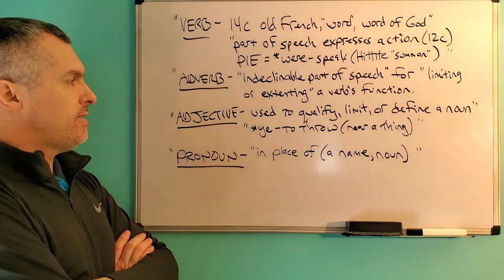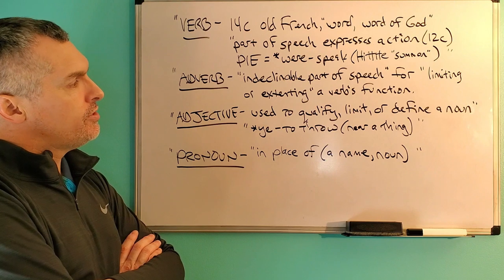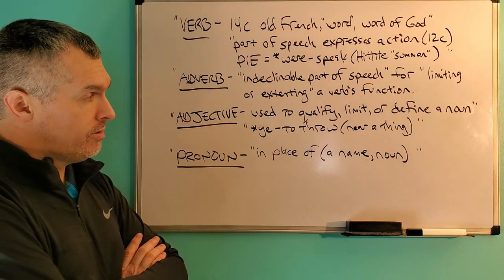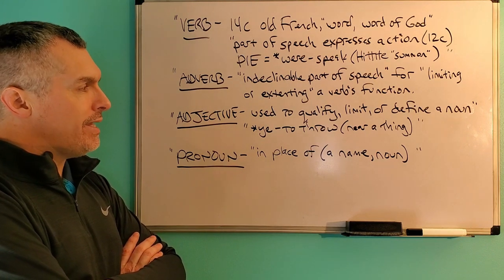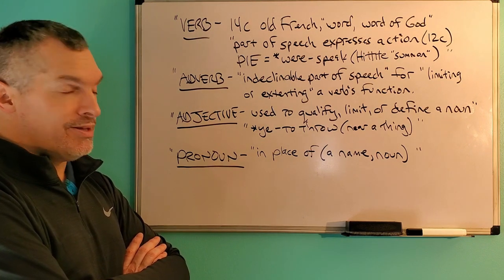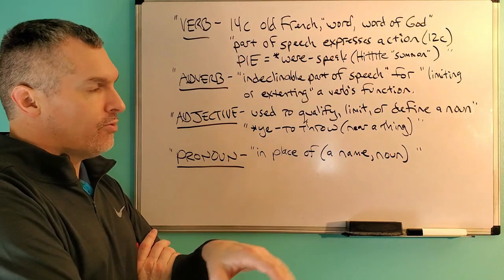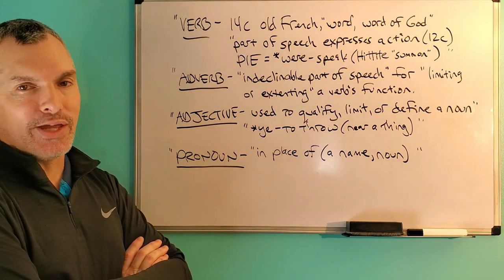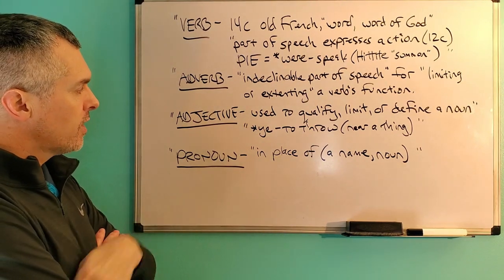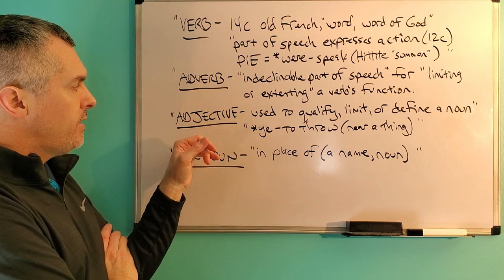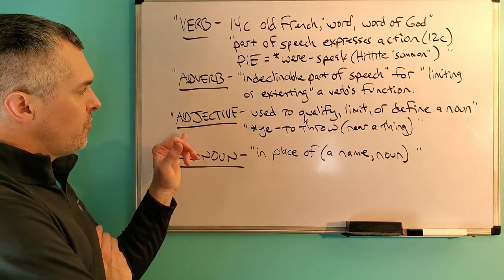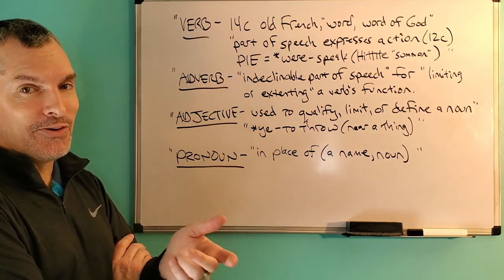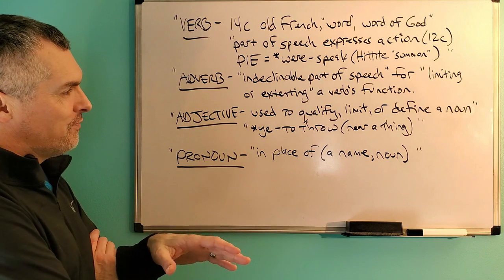Next we have adjective, which is used to qualify, limit, or define a noun. It comes from Proto-Indo-European Y-E, which means to throw near a thing. An adjective is projecting something towards a thing, towards a noun. A-D-J-E-C: to throw.